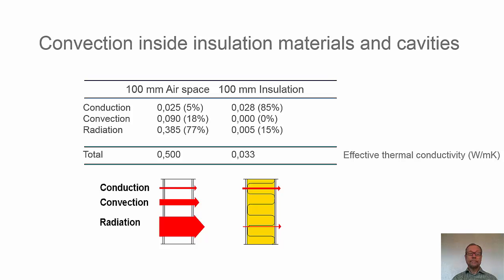We know that air in itself has quite low heat conductivity, so the conduction is low. The rough numbers: 5% of the heat transfer is due to conduction, 18% is due to convection, and 77% due to radiation. If we consider that as a kind of material inside with an apparent thermal conductivity, the lambda value, or the thermal conductivity, would be 0.5 W/mK.